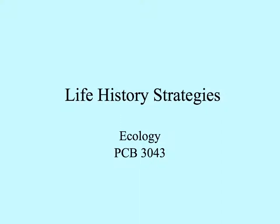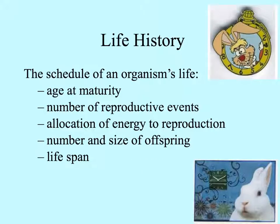Let's look at life history strategies. Life history is the schedule of an organism's life, including its age when it's mature and able to reproduce, the number of reproductive events it has in its life, how it allocates energy to reproduction, how many and how big are the offspring, and also what is the lifespan of that individual.